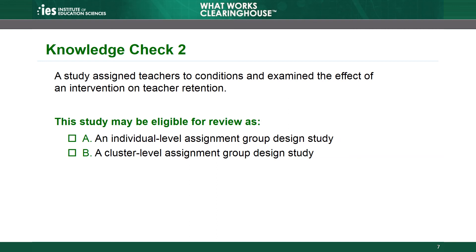Knowledge Check 2: A study assigns teachers to conditions and examines the effect of an intervention on teacher retention. This study may be eligible for review as: A. An individual-level assignment group design study, or B. A cluster-level assignment group design study. The correct answer is A. Teachers are the unit of assignment and the data for the analysis are based on teachers, so the study is eligible for review as an individual-level group design study. Choice B is incorrect because the data are not based on individuals within clusters — teachers are the individuals being studied and were assigned to conditions as individuals, so the study does not meet one of the eligibility criteria for cluster studies.